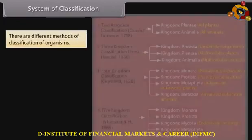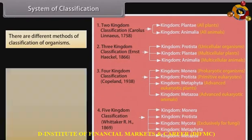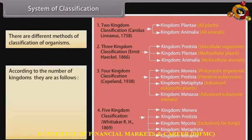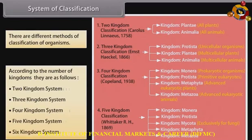There are different methods of classification of organisms. According to the number of kingdoms, they are as follows: 2 Kingdom System, 3 Kingdom System, 4 Kingdom System, 5 Kingdom System, and 6 Kingdom System.